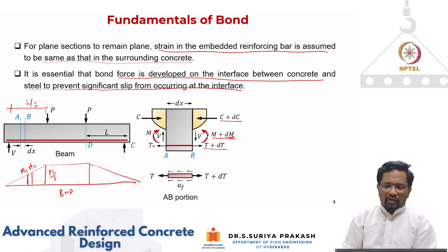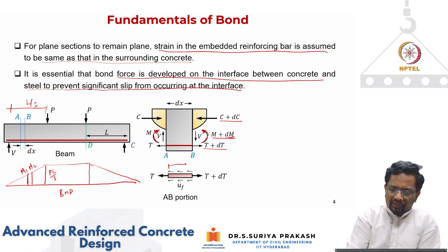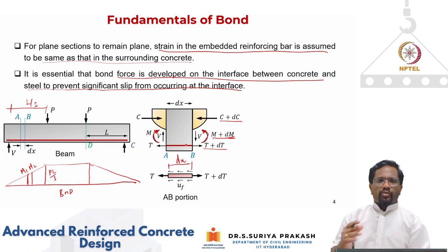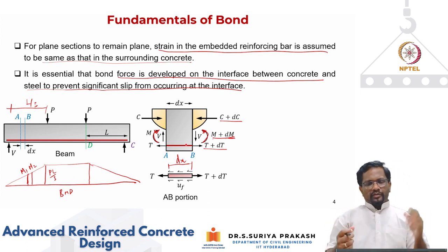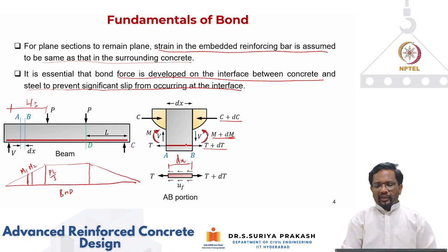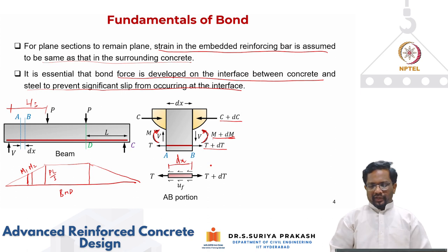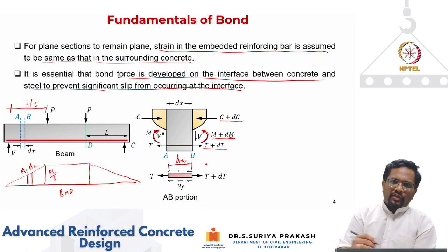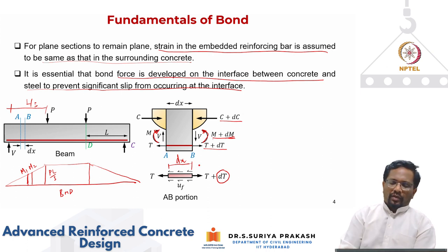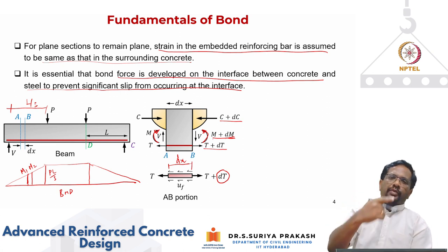If I take only the bar between the length dx, the bar is in tension: force T on the left side and increased force T plus dT on the right side. There is a variation and increase in tension over a distance dx. To satisfy horizontal force equilibrium, the dT must be equaled by the stresses developing at the interface of the bar around the perimeter for a length dx.